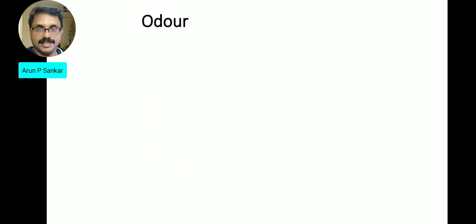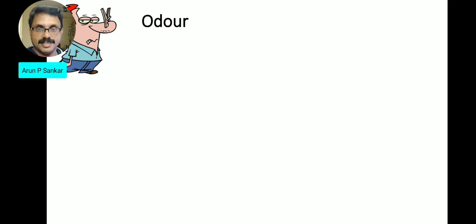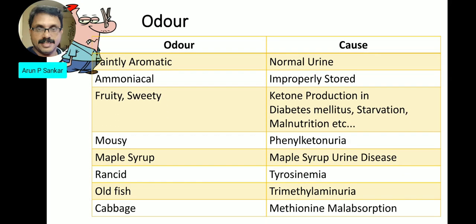Coming to odor or smell — smell can help with diagnosis. Normal urine has a faintly aromatic smell. Abnormal changes: ammoniacal smell is one such change seen in certain urine conditions.